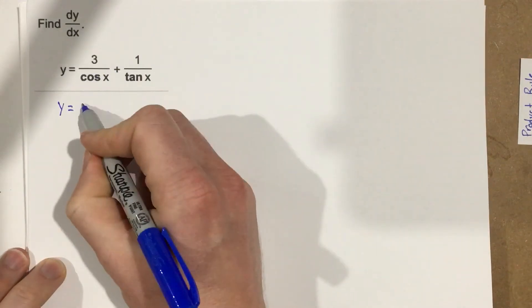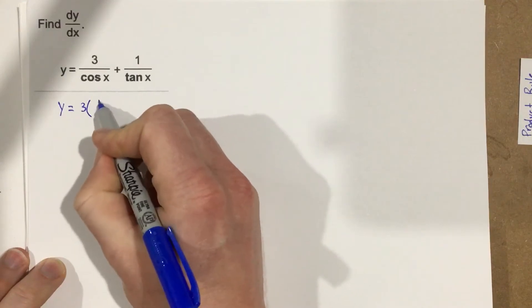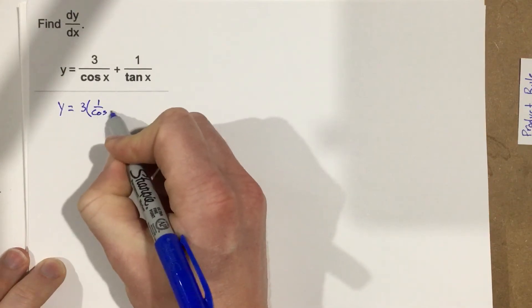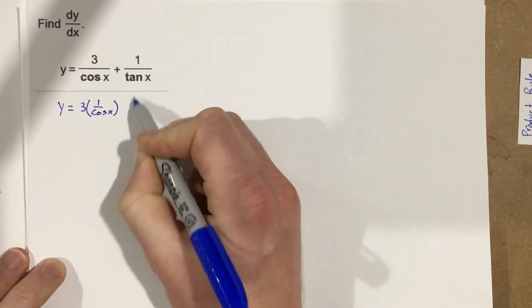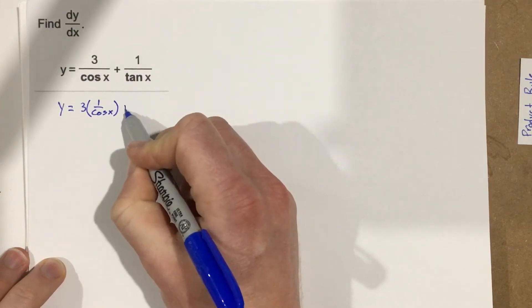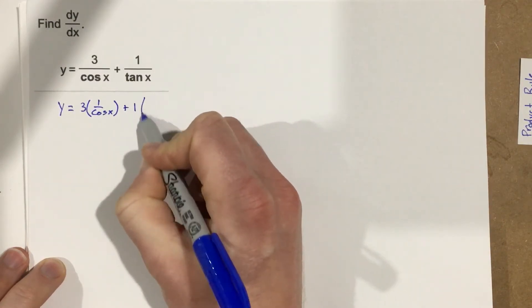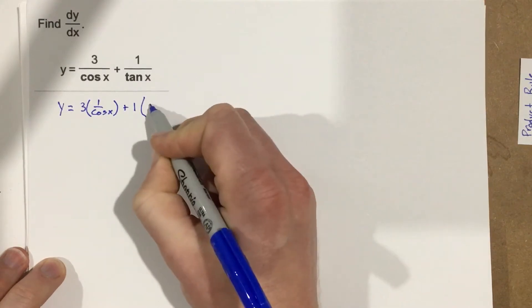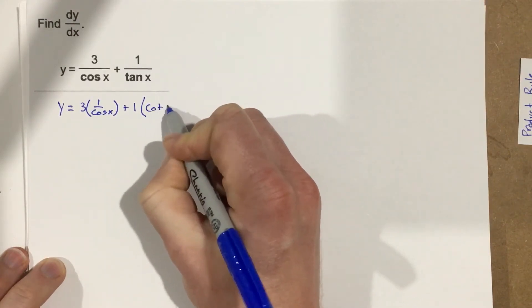So, I know that this is really 3 times 1 over cosine x, and that this is really plus 1 over tangent, that's really just cotangent x.